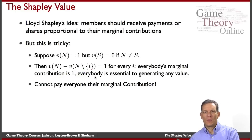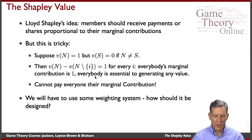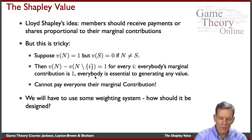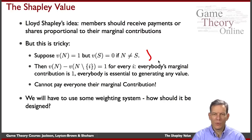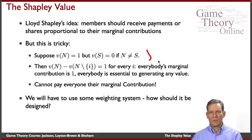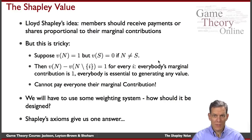Since everybody's marginal contribution to the society without them is one, we can't pay everybody what they're responsible for in leading to the grand coalition. We're going to have to think about some way of weighting contributions to come up with something reasonable — for this particular case it would be reasonable to give everybody one-over-n. But in situations where there are asymmetries in terms of who contributes which value, we'll have to think carefully about how contributions should be weighted.